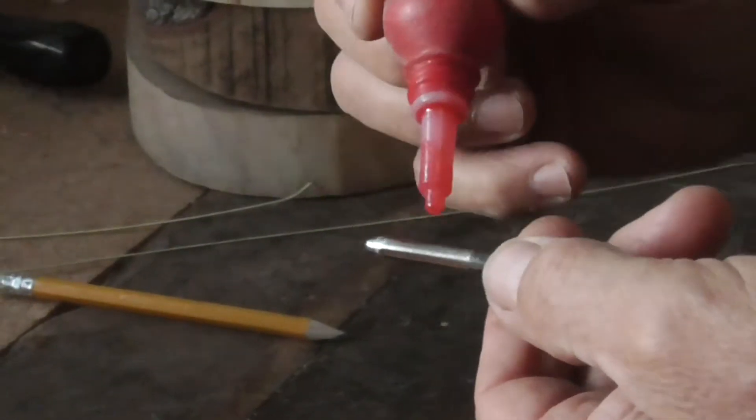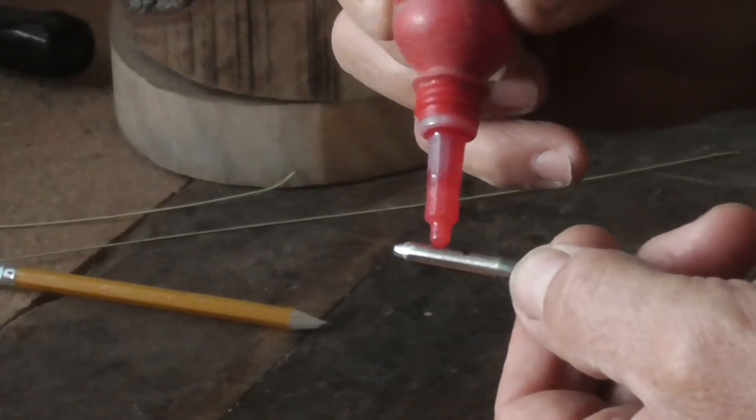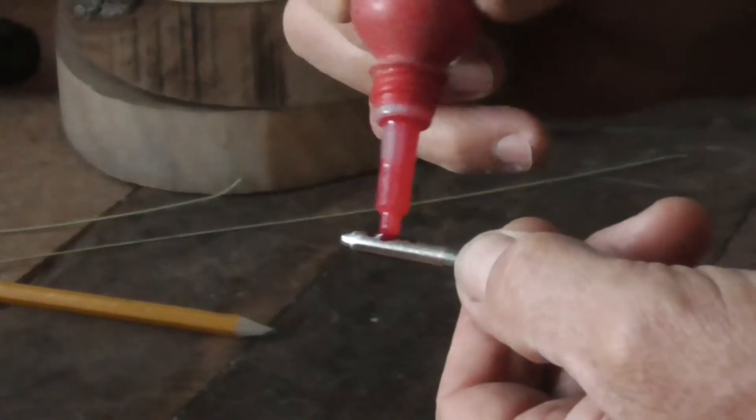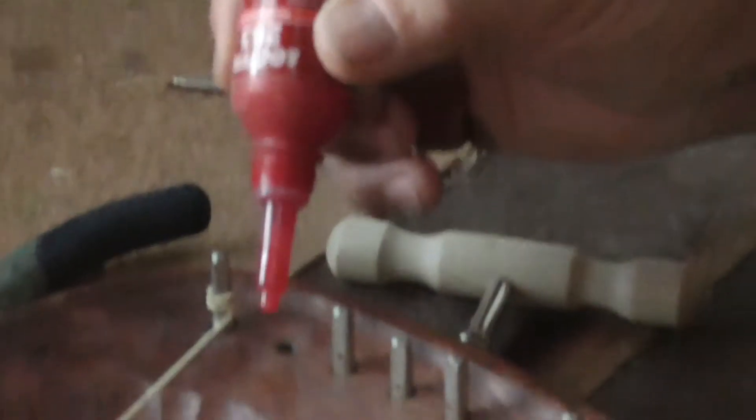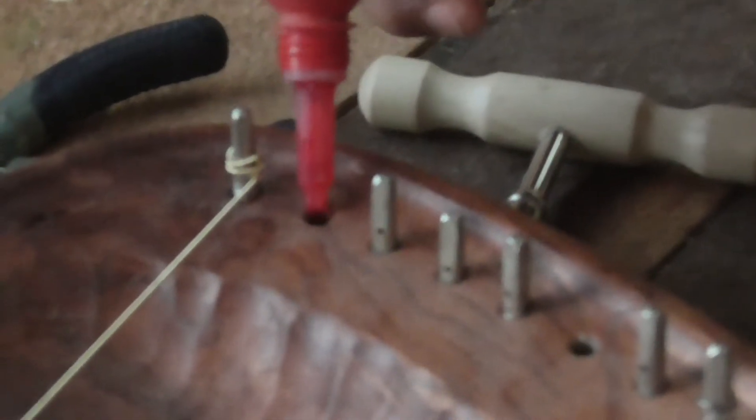Now you're putting a little bit of this ketchup - making a joke, of course this is special Loctite. It looks like ketchup. We'll put a little bit on here, rubbing it around.